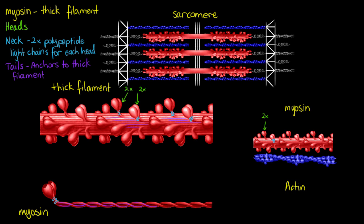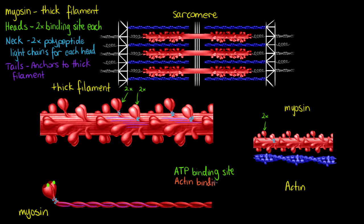When I mentioned earlier that we had two heads on each myosin molecule, I saved the detail for last because it's the most important part. On our myosin heads we're going to have two binding sites per head — so four per myosin. The first of these two binding sites is an ATP binding site, where we're going to be performing ATP hydrolysis. The second binding site is for actin, which I'm highlighting in orange and outlining in yellow. This actin binding site is going to interact with actin on its myosin binding site.